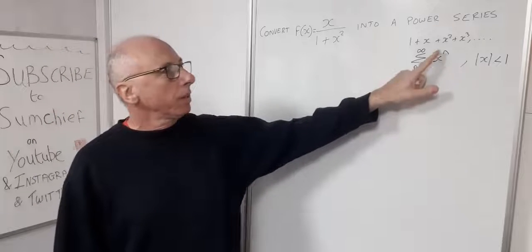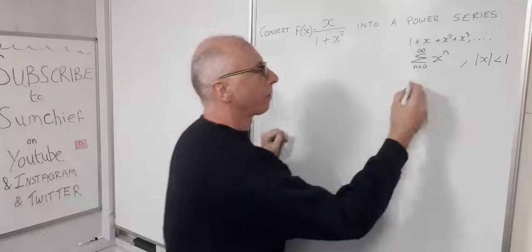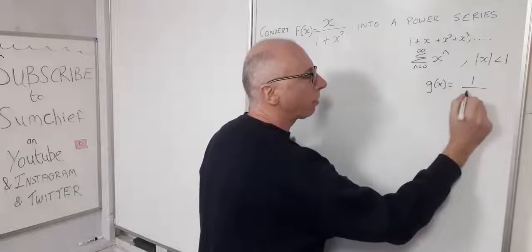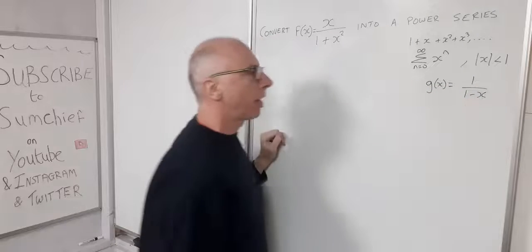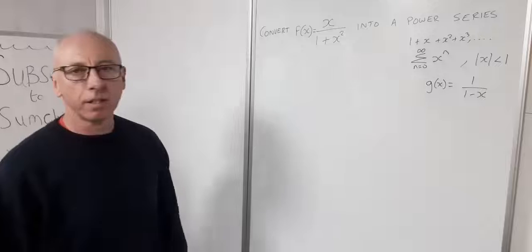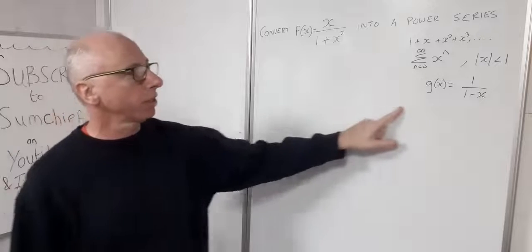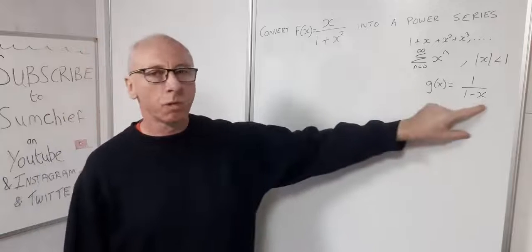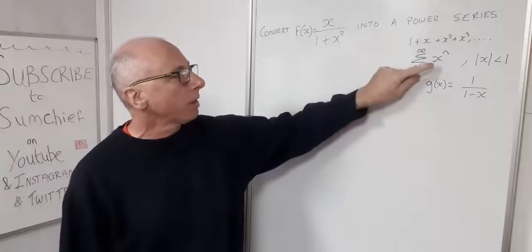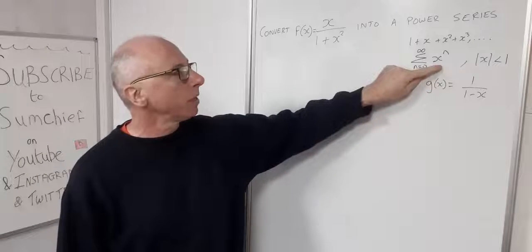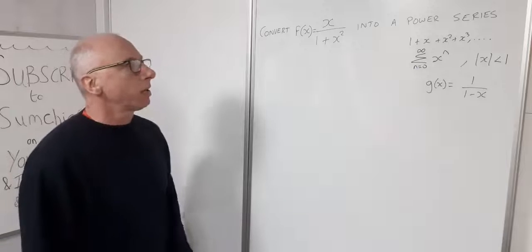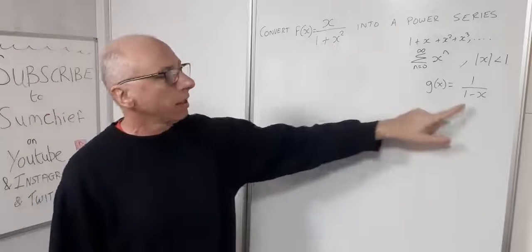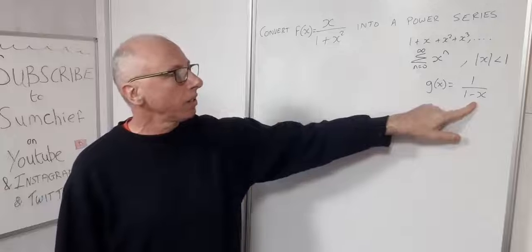Written as a function — I'm going to call this g of x — this would be 1 over 1 minus x as its function representation. What we've got to do is get our original function into some format similar to this, and then we can create a power series similar to this one.